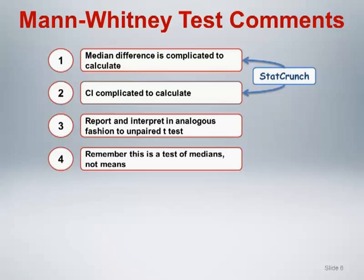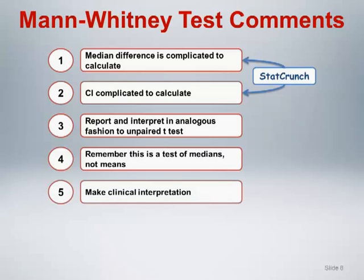There may be situations when the parameter of interest is the population median, and the Mann-Whitney test is the preferred approach for analysis. There may be other situations when the parameter of interest is the population mean, but the assumptions of the unpaired t-test are not met, and the Mann-Whitney is selected as a robust alternative to the t-test. We will address test selection issues further toward the end of this module. As is always the case, don't forget to distinguish between the statistical and clinical significance of the data, and provide a clinical interpretation of the test results and estimated median difference in its confidence interval.